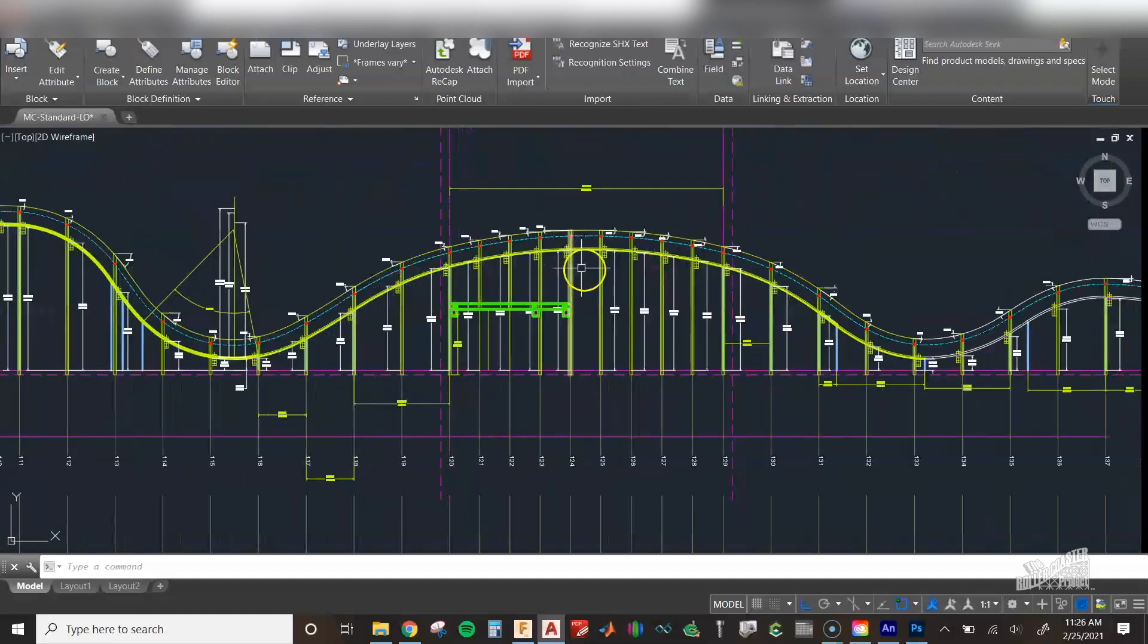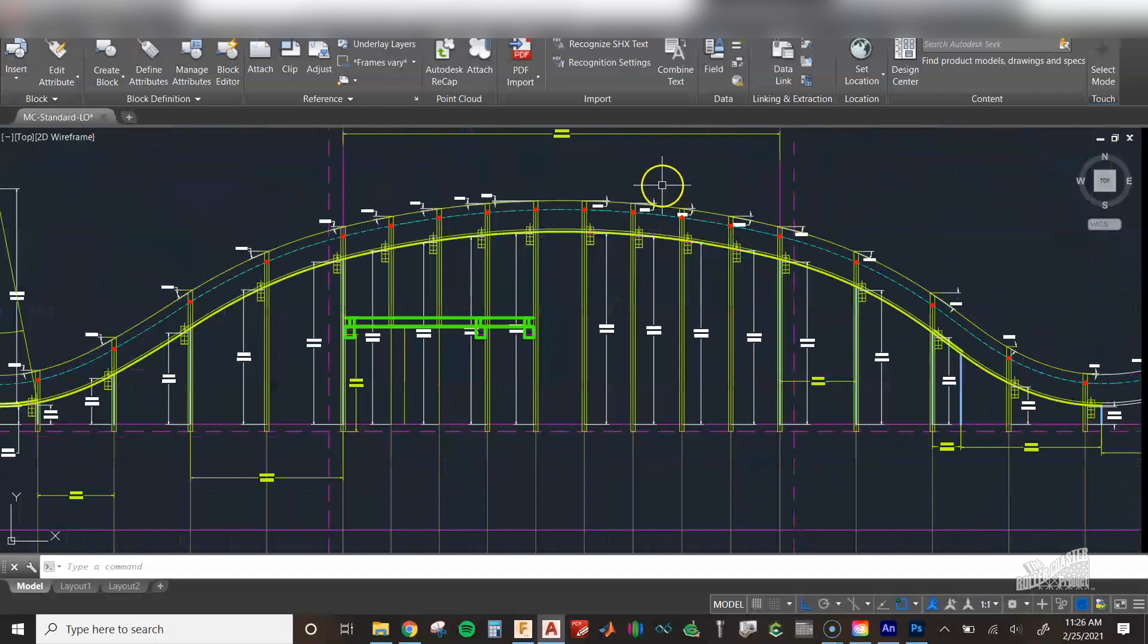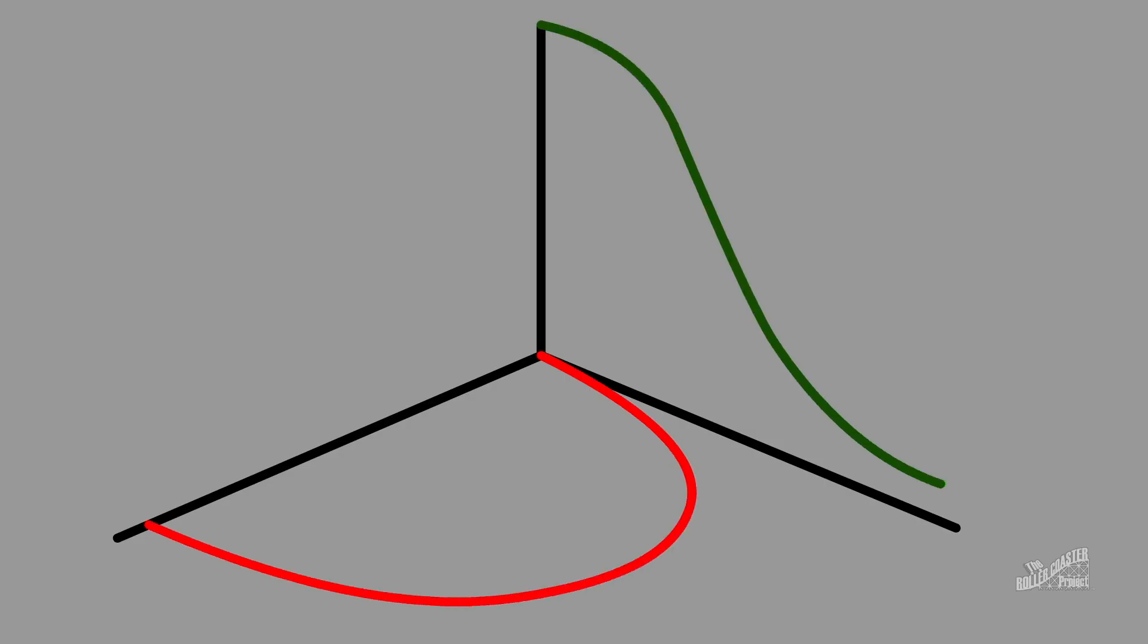This blue line represents the rider centerline, or what I chose to be the rider centerline. If we take this vertical profile and we apply it over the plan, we end up with this 3D curve from our track centerline.